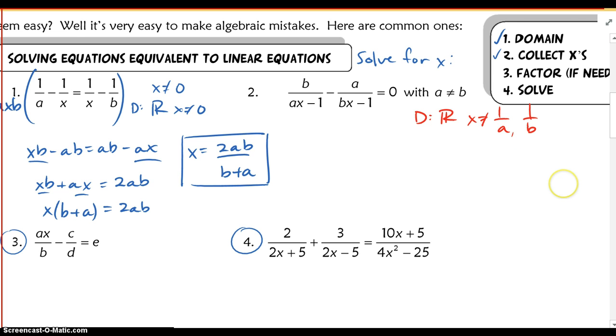Now, if I look, my common denominator here is going to be ax minus 1 times bx minus 1. And when I multiply that throughout, I'm left with b times bx minus 1 minus a times ax minus 1, equaling still 0.